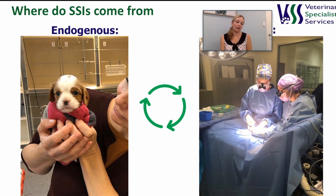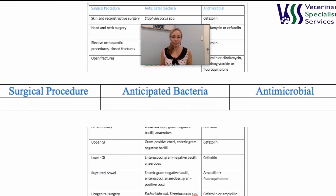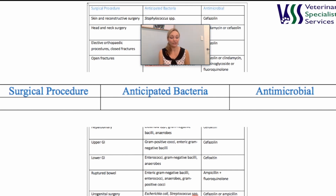Alternatively, the infection can arise from the environment — for example the hospital, equipment, instruments, or drapes — and these are called exogenous infections. There's a table that lists which bacteria we may encounter during each procedure, and we're happy to email it to anyone tuning in. A point worth mentioning is that antibiotics are excellent at treating non-surgical infections such as urinary tract infections and pyodermas, but they are much less effective at treating surgical site infections. If we rely simply on antibiotics alone, we often still get surgical site infections, but they're resistant to the antibiotics we've prescribed.